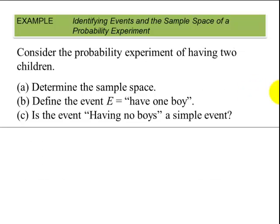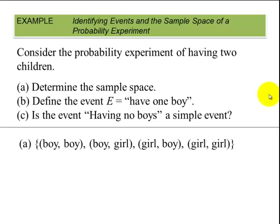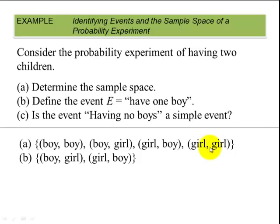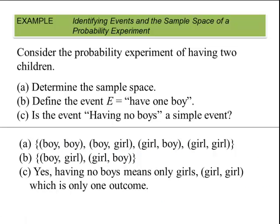Consider the probability experiment of having two children. Determine the sample space; define event E as having one boy; and determine if the event having no boys is a simple event. The sample space is: boy-boy, boy-girl, girl-boy, and girl-girl. Having one boy happens two ways: boy-girl and girl-boy. The event of having no boys is a simple event — yes — because there is only one outcome: both children are girls.